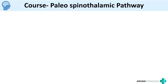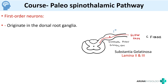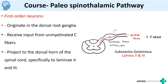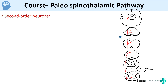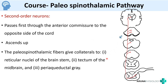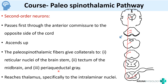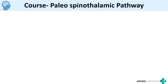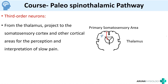To summarize the course: for the paleospinothalamic tract, the first order neuron originates in the dorsal root ganglia, receives input from unmyelinated C fibers, and projects to the dorsal horn at laminae 2 and 3 — the substantia gelatinosa. The second order neuron crosses through the anterior commissure to the opposite side, ascends, and gives collaterals to brain stem pain areas: reticular nuclei of the brain stem, tectum of midbrain, and periaqueductal gray. It then reaches the intralaminar or midline nucleus of the thalamus. The third order neuron projects to the somatosensory cortex for interpretation of slow pain.